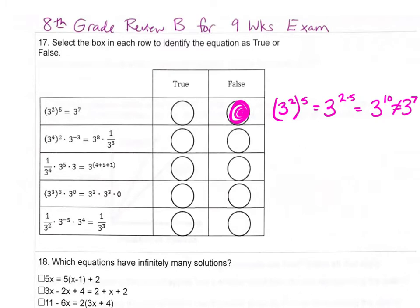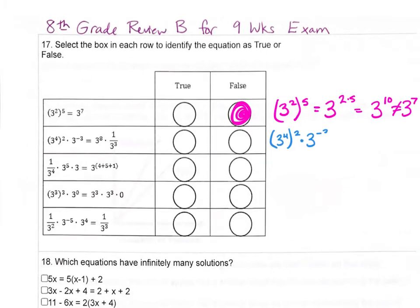For this next one, we have 3 to the 4th power raised to the 2nd power, times 3 to the negative 3rd power. A power raised to a power — we keep the base and multiply the exponents. Now we have like bases that we're multiplying, so we keep the base and add the exponents. That's 8 plus negative 3, which is 3 to the positive 5th power.